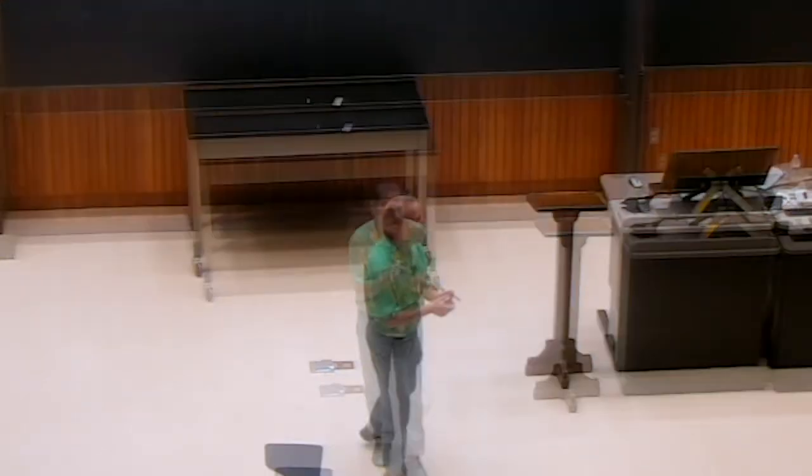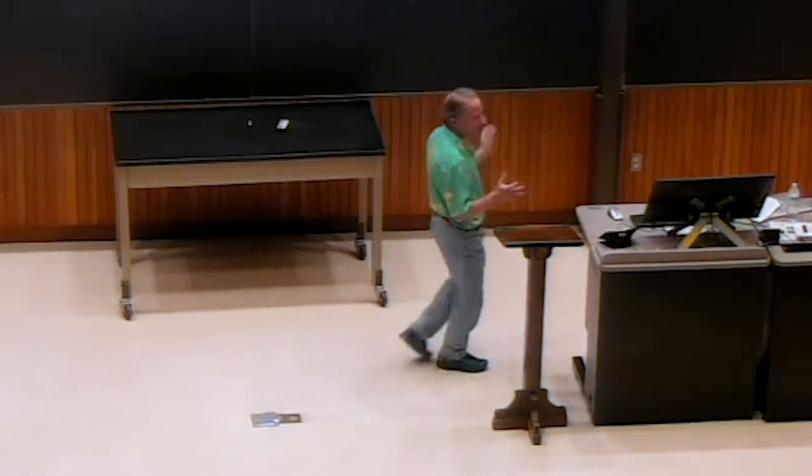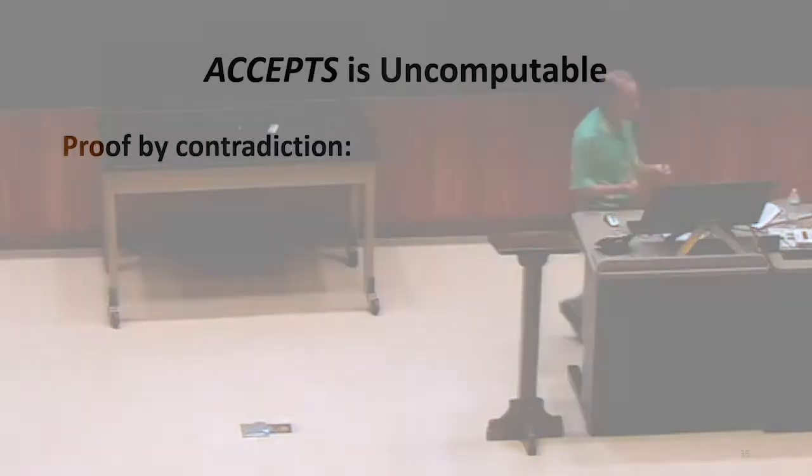So if we're going to prove something by contradiction, what's our assumption going to be that we want to get a contradiction to? Yeah, our assumption is if it's computable, that must mean there's some machine that computes it. That's going to be our assumption.